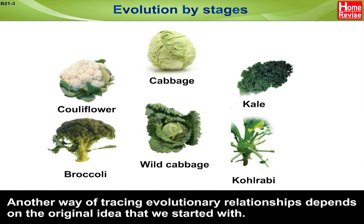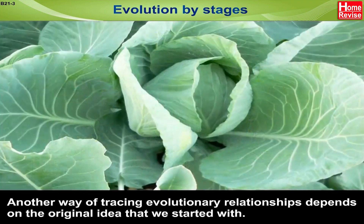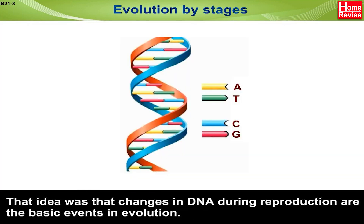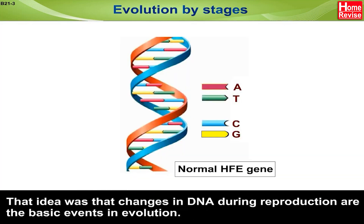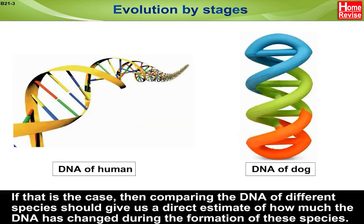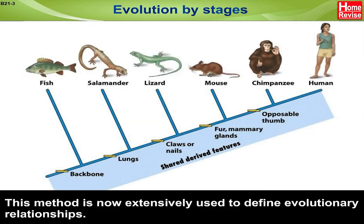Another way of tracing evolutionary relationships depends on the original idea that changes in DNA during reproduction are the basic events in evolution. Comparing the DNA of different species gives us a direct estimate of how much the DNA has changed during the formation of those species. This method is now extensively used to define evolutionary relationships.